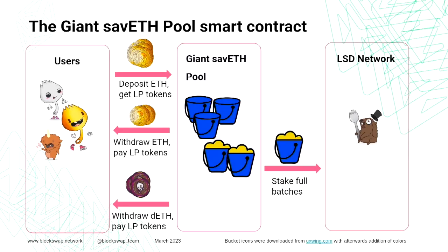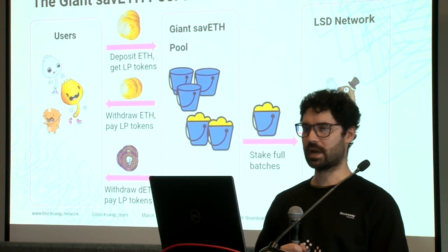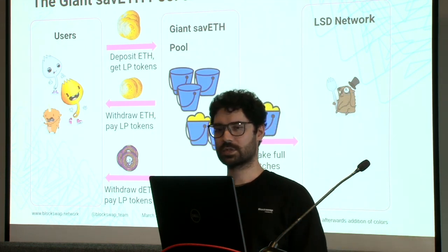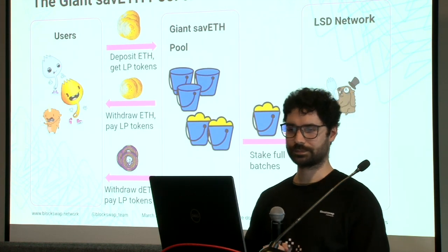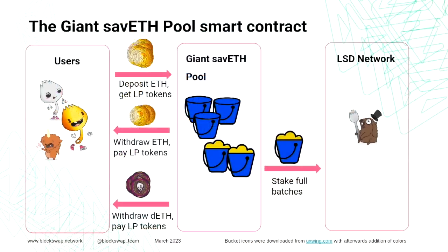Now I'll go into how the Giant Save ETH pool contract works, and then show how I formalized some properties of that contract. On the left side, happy users want to use the Giant Save ETH pool. They can deposit ETH and in return receive LP tokens. They deposit ETH to a batch in the pool, and assuming that batch has not been staked yet, they are still allowed to withdraw the ETH by paying back the LP tokens. When we have a full batch, it can be staked to an LSD network, and in return users can get dETH by paying their LP tokens. The dETH is a yield-bearing token, so they can later claim ETH rewards for holding it.